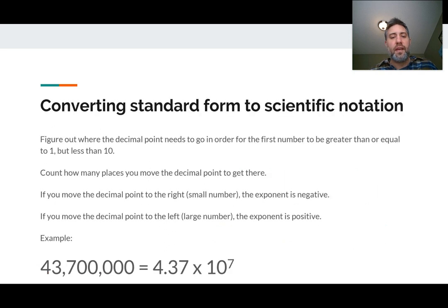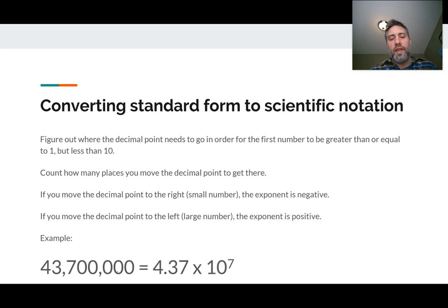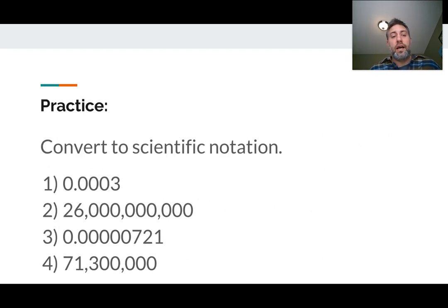That's standard form. You're obviously going to go the other direction too. So for example, 43,700,000 — you're going to move that decimal over and just count how many times to move it over, figuring out how many tens you're multiplying by. Pause here, try them, and see what you get.